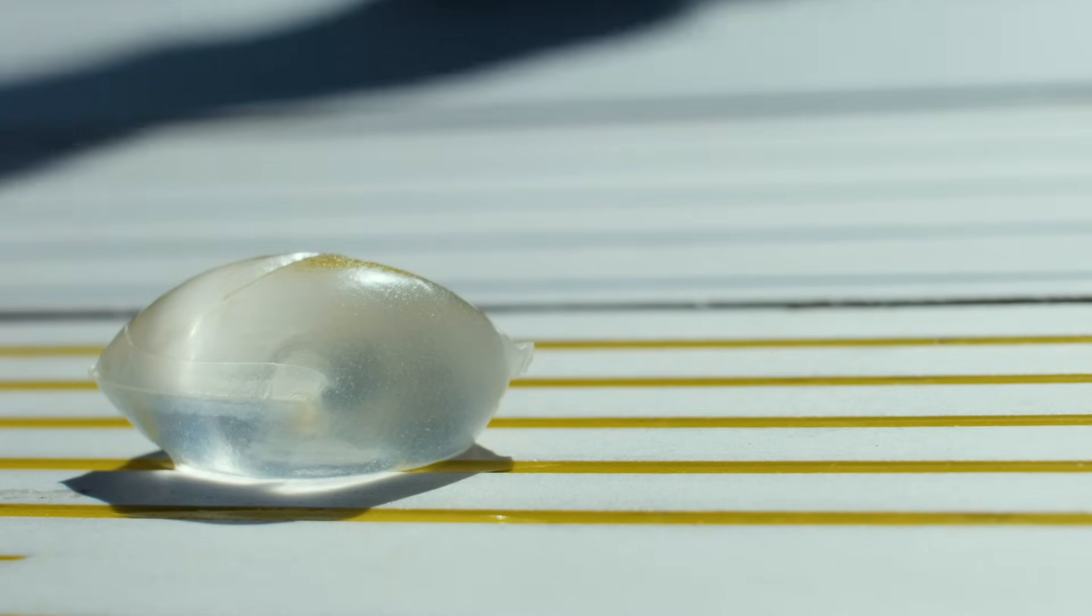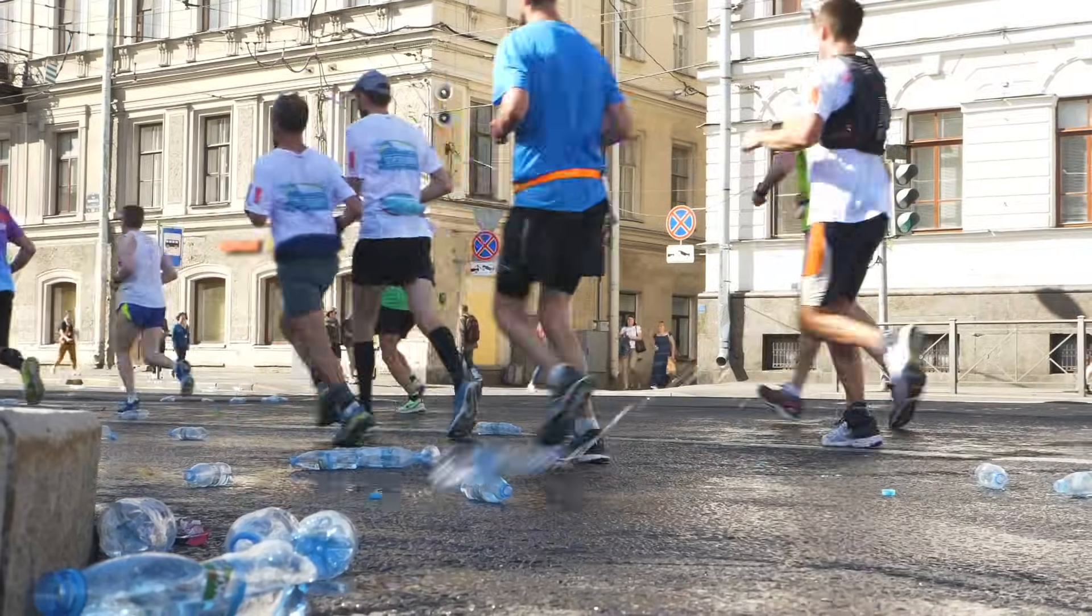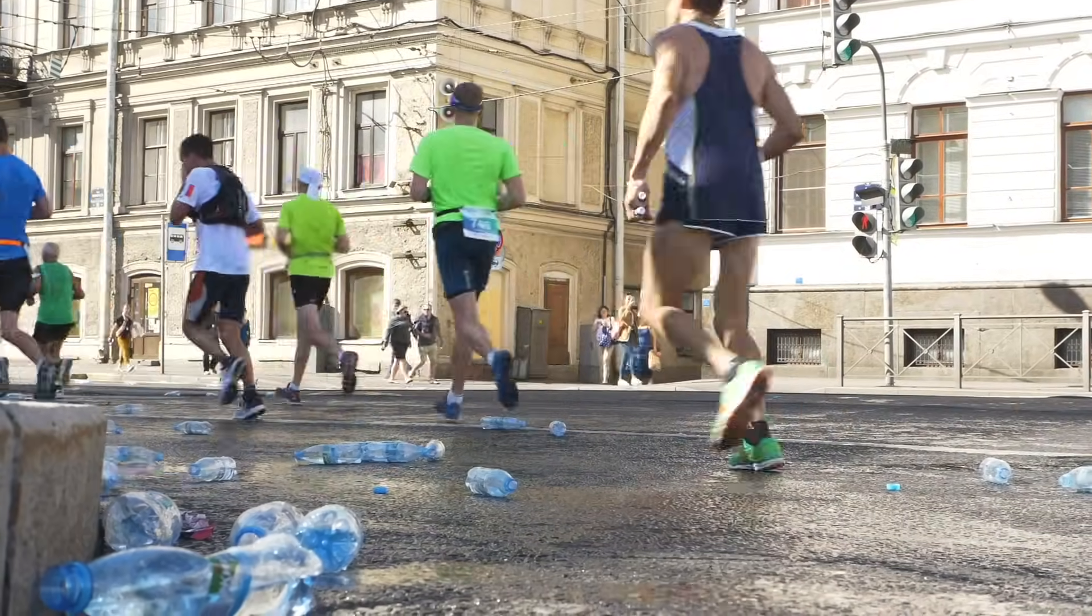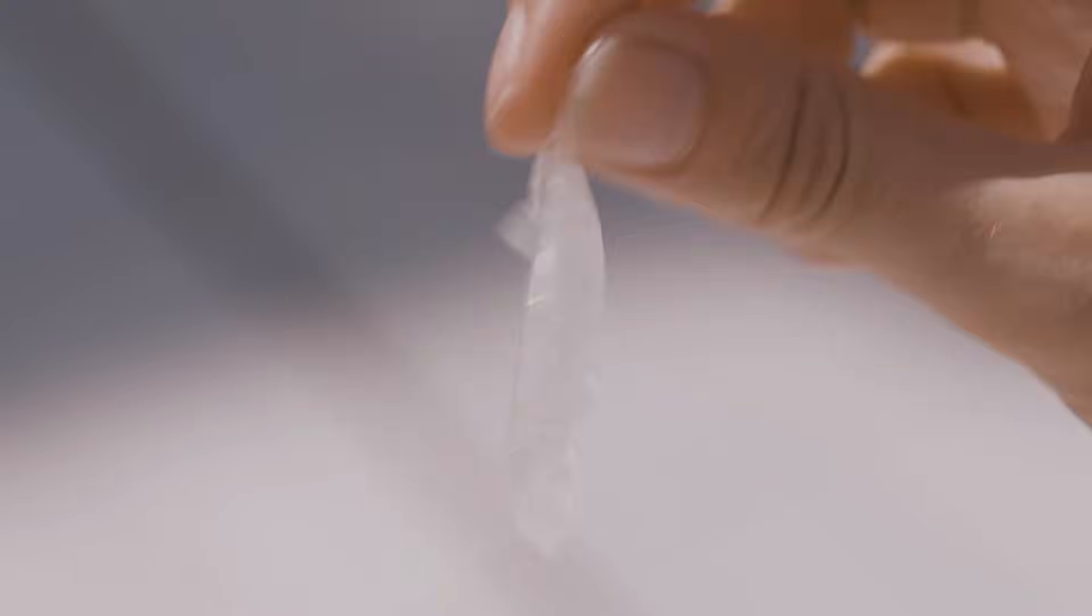They've done versions of the Ooho that are for marathon runners. You've seen pictures of marathons where the sides of the roads are littered with plastic bottles. What if they were littered instead with something that was going to biodegrade very quickly?